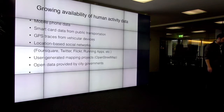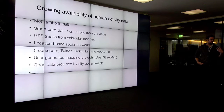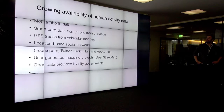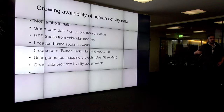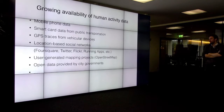We can combine this approach with big data. There is a growing availability of human activity data in cities. Here are some examples of different data sources: mobile phone data, smart card data from public transportation that gives us information about how people flow through cities, GPS traces, location-based social networks. Foursquare in the past was very helpful to see where people check in and what they are doing. Twitter, of course. And also OpenStreetMap is very useful. Cities are also opening up more and more of their data to the public.